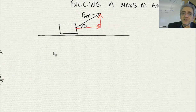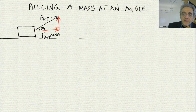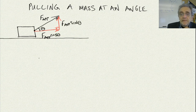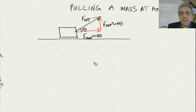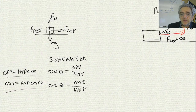As it applies here, the adjacent is equal to F applied cosine theta, and the opposite is F applied sine theta. All you've got to remember is: if it's the opposite side, it's the hypotenuse multiplied by sine, and if it's the adjacent side, it's the hypotenuse multiplied by cosine.